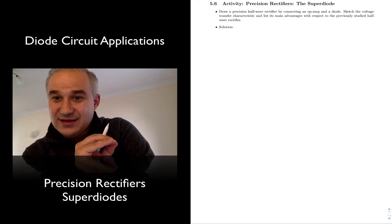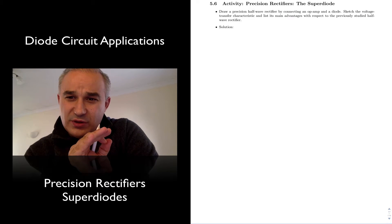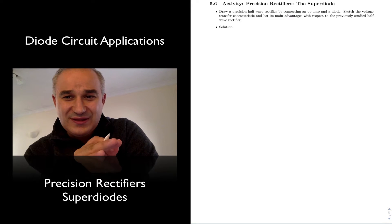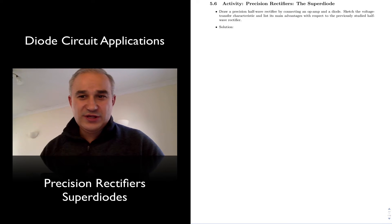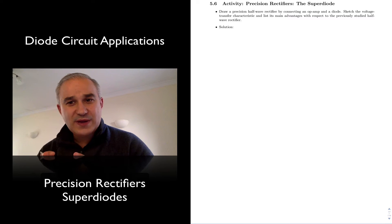Let's cover a neat circuit that is important when you need to do precision rectification, and we call this the super diode. It works by combining an operational amplifier and a diode.